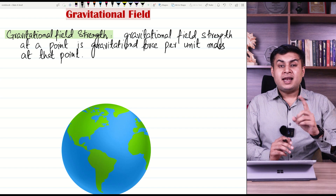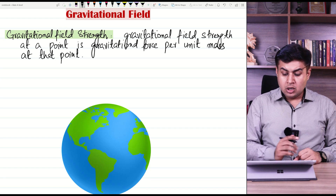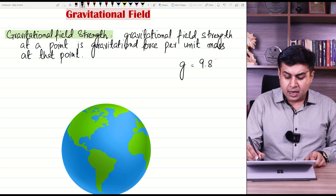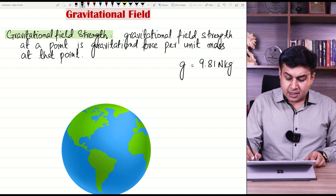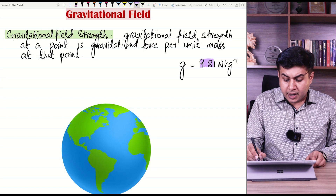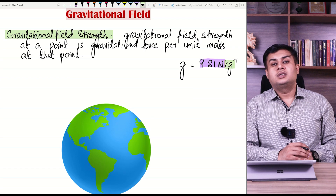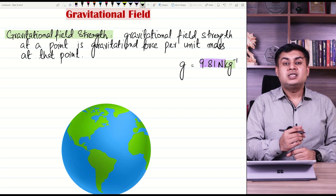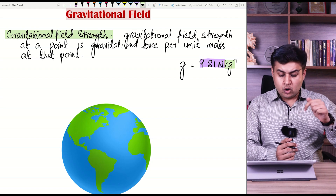Gravitational field strength tells us the gravitational force acting on 1 kg mass. You know that at the surface of Earth the value of gravitational field strength is 9.81 newtons per kg. This means the gravitational force is 9.81 N acting on every 1 kg mass at the surface of Earth. As the distance from Earth increases, the gravitational field strength value will also reduce.